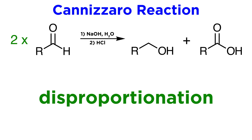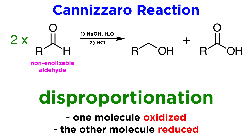This reaction involves the disproportionation of two equivalents of a non-enolizable aldehyde, where disproportionation means that one molecule is oxidized and the other is reduced. So as we can see here, two equivalents of the aldehyde will produce one equivalent of the corresponding alcohol and one equivalent of the carboxylic acid.